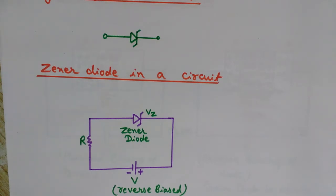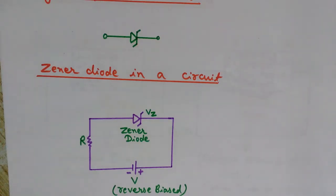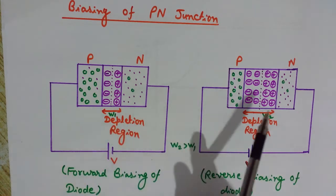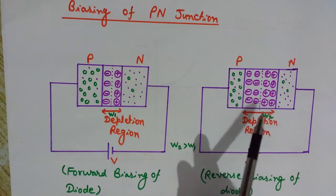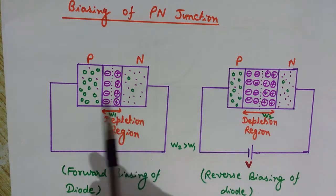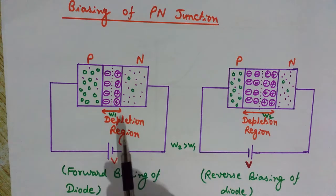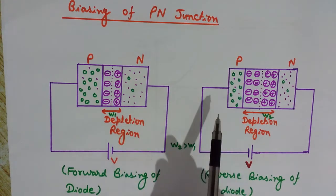The zener diode is also used in the breakdown region. We will understand what we mean by breakdown voltage and how the breakdown of a zener diode occurs, along with concepts like doping and VI characteristics. This diagram shows the biasing of a PN junction — this is the biasing of a normal PN junction.